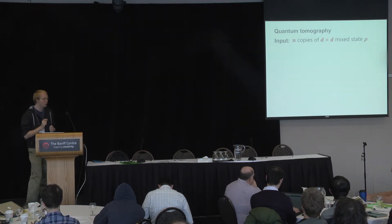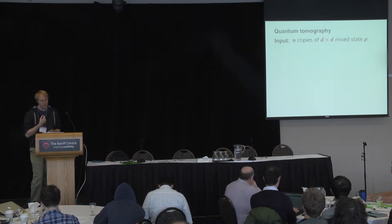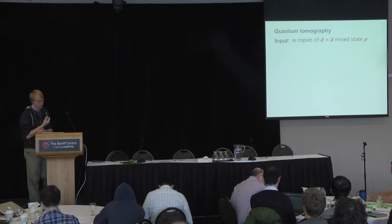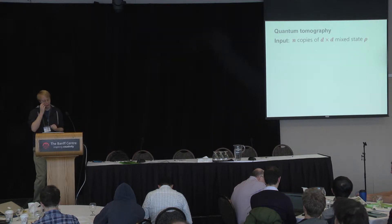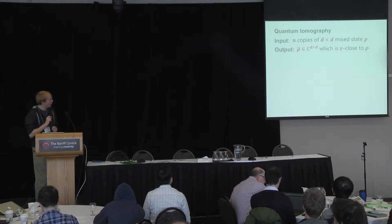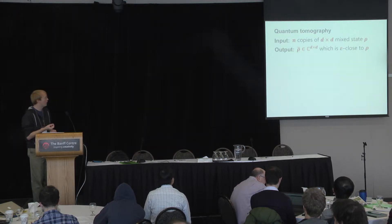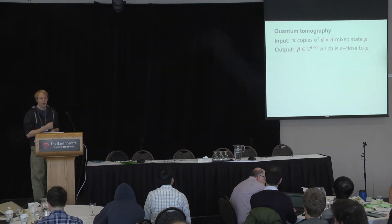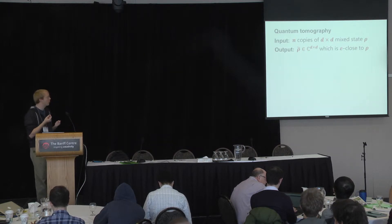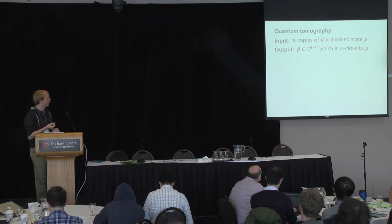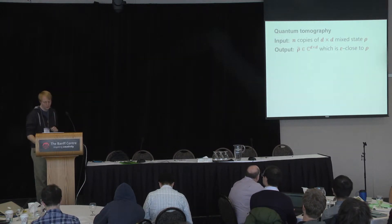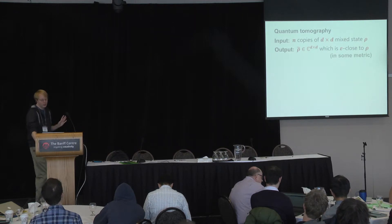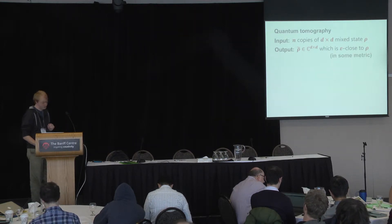Formally, your input to the problem is going to be n identical copies of an unknown d by d mixed state, rho. Here, d is the dimensionality of your state. And the output is going to be a classical description of a d by d matrix, rho tilde, which is supposed to be a good approximation for rho — epsilon close to rho according to some metric, whatever metric you care about.